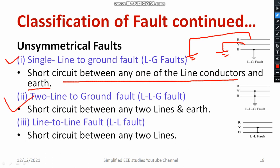Next is two line to ground fault, also called double line to ground fault or LLG fault. Here, any two lines — such as Y and B — are short circuited and also directly connected to the ground. That means short circuited between any two lines and the earth. The occurrence of this kind of fault is very rare; it is one of the least occurring faults.